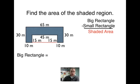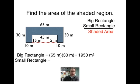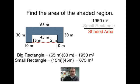So the big rectangle, the area is equal to 65 times 30. That's 1950 meters squared. The small rectangle will be 15 meters times 45 meters, which will be 675 meters squared. So I'll take 1950, take away the small rectangle, which will be 675, and that leaves me 1,275 meters squared for the area of the shaded part.